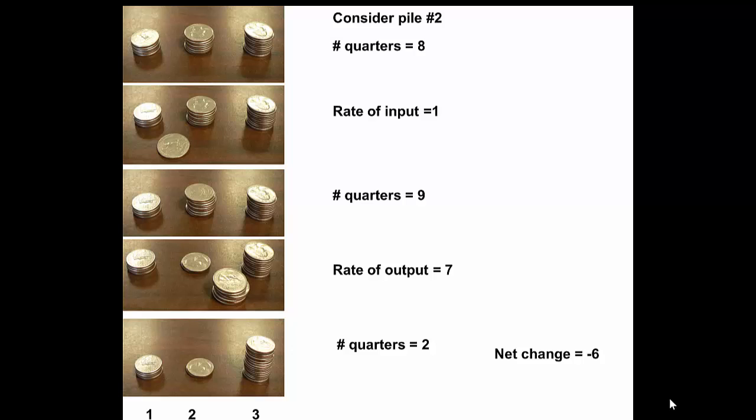Then let's take seven out. Then if we just keep looking at pile number two, there's two quarters remaining, so the net change is minus six, so that would be erosion.